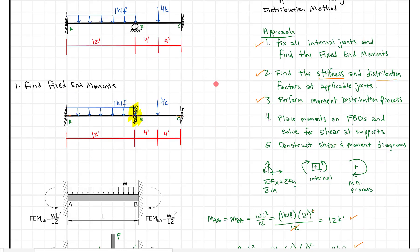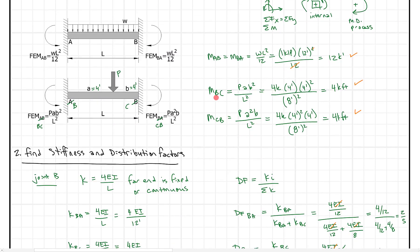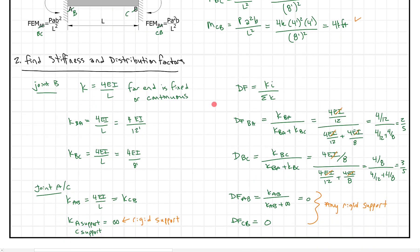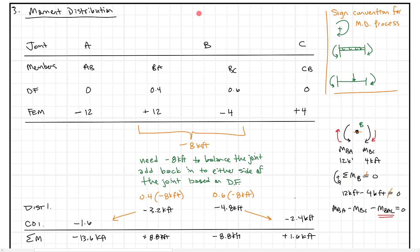Scrolling down, we can see where we went: we did our fixed end moments, our stiffness and distribution factors, and the moment distribution process. What we ended up solving for here is — this sum of moments is really the moment at joint A on beam AB, and this is the moment at joint B on beam BA.